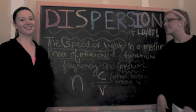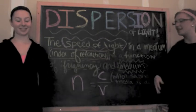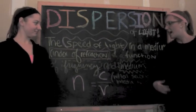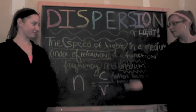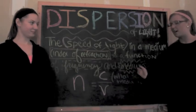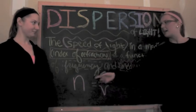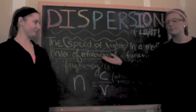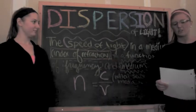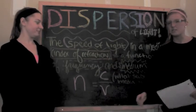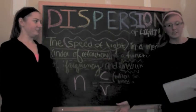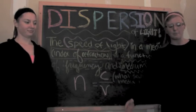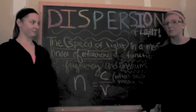Dispersion is the speed of light in a medium, which is like the index of refraction as a function of frequency in that medium. And n is the symbol of the index of refraction, which is a dimensionless number that describes how light propagates through a medium.